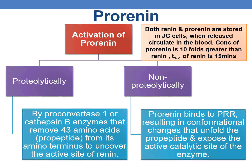Coming to pro-renin: pro-renin is inactive. It is activated either proteolytically or non-proteolytically. Proteolytic activation is accomplished by proconvertase 1 or cathepsin B enzymes, which remove the 43 amino acid pro-peptide from the amino terminus to uncover the active site of renin.